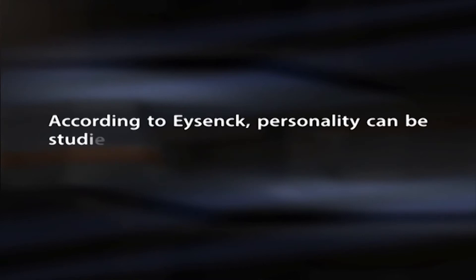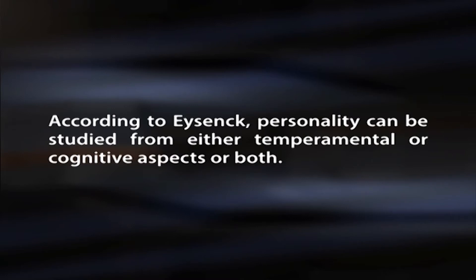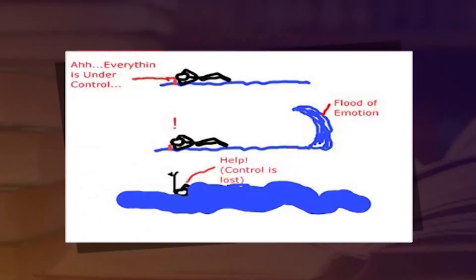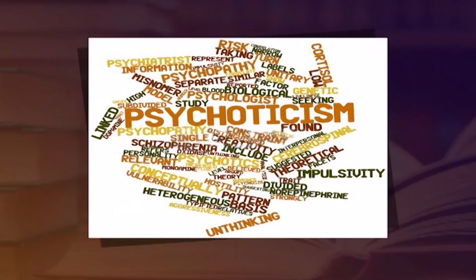Individual differences in personality or temperament are analyzed in terms of traits, which can be defined as theoretical constructs based on covariations of a number of behavioral acts. Eysenck further proposed that traits themselves inter-correlate and make up higher-order factors or super-factors, which he calls types. He strongly advocates that there are only three major dimensions or super-factors in the description of personality: extraversion-introversion, emotional stability versus instability or neuroticism, and psychoticism versus impulse control.